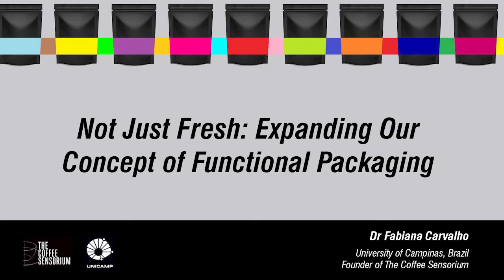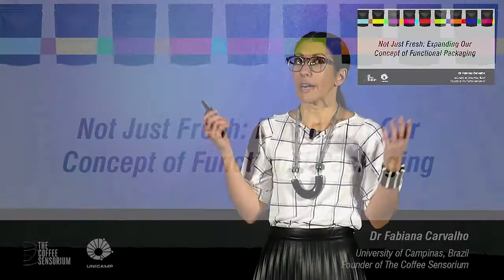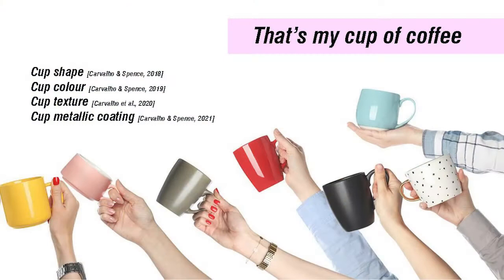In the case of coffee, we can think about extrinsic factors that are directly associated to consumption, such as the coffee cup and the coffee packaging. Our research group has investigated how different characteristics of the cup can impact both sensory and hedonic evaluation of the coffee by consumers and experts. It turns out that the cup shape, the cup color, the cup texture, and the cup metallic coat — all these attributes of the cup — can modify the perception and the hedonic evaluation of coffee.